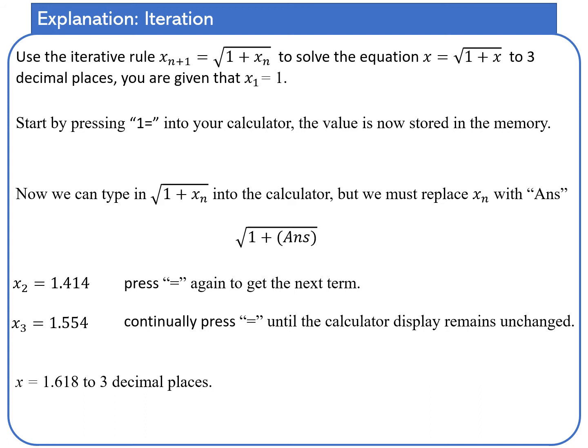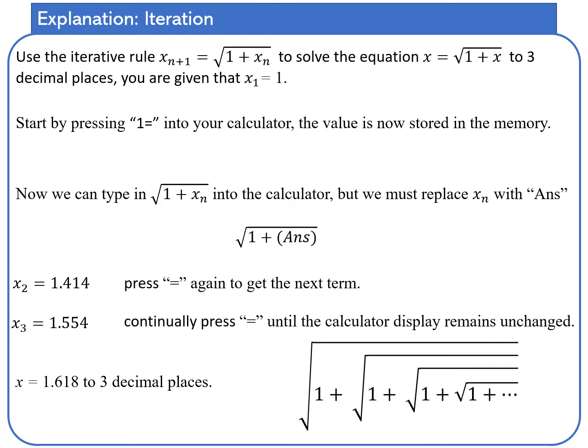Bringing in what we had initially, we can see that's the iterative process. You have the square root of 1 plus the square root of 1. Each time you press equals, essentially you're doing another one of those square roots of 1 plus. You keep on repeating that calculation — the more of them you do, the more accurate we get.